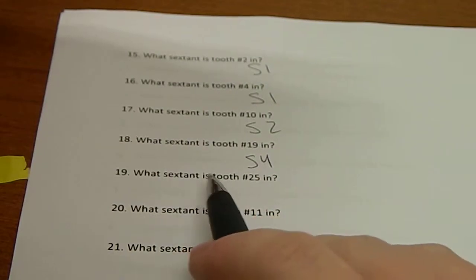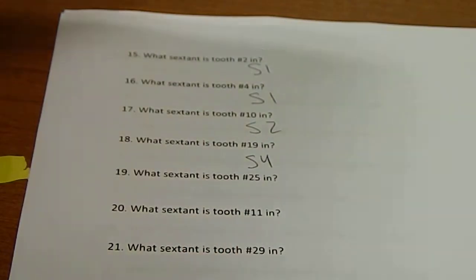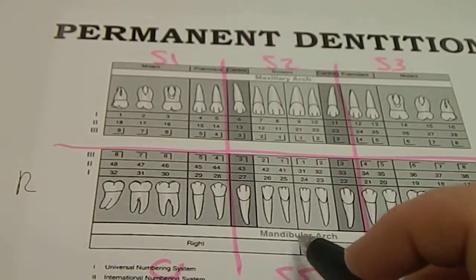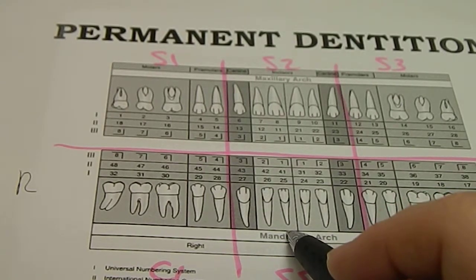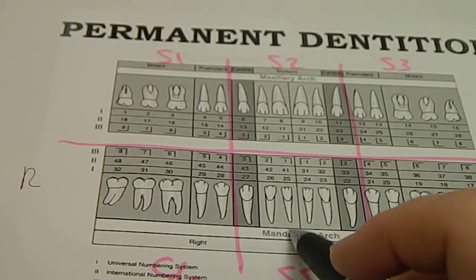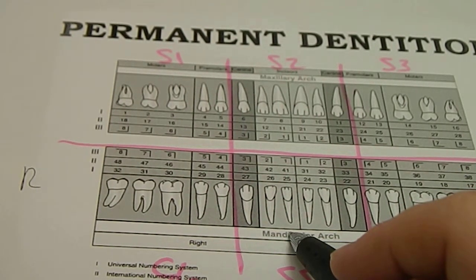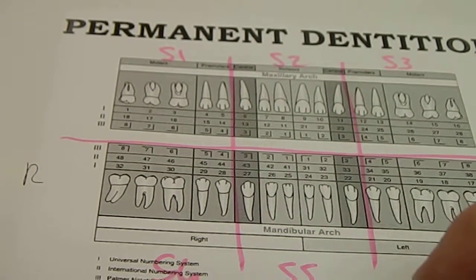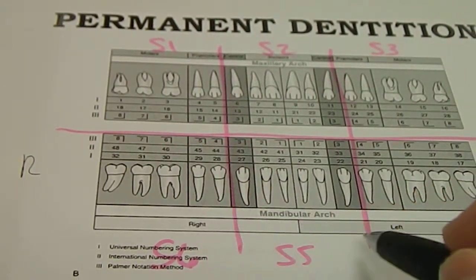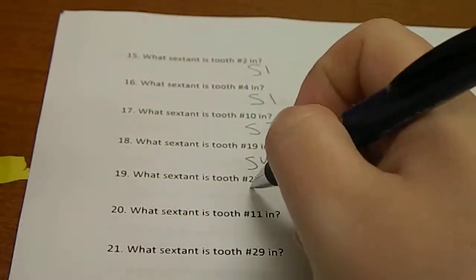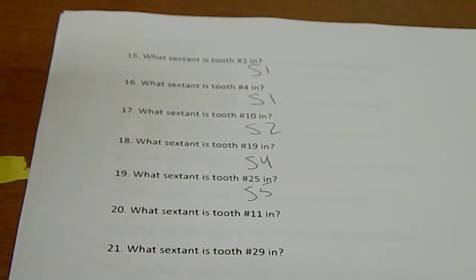What sextant is tooth number 25 in? We know 25 is a central incisor — here it is on the lower right. It's an anterior tooth, so it's in sextant number five. And that is quadrants and sextants.